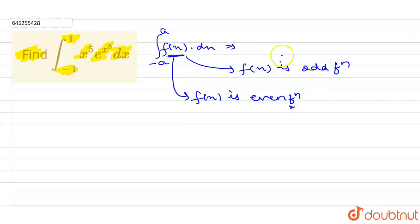So odd function means if I put on the place of x minus x, so f of minus x equals minus f(x).